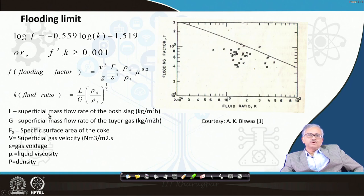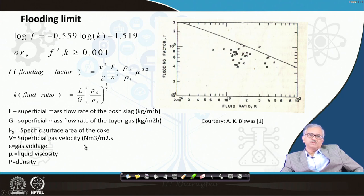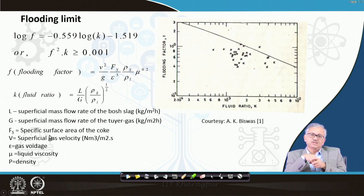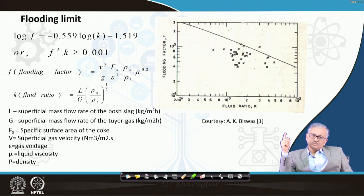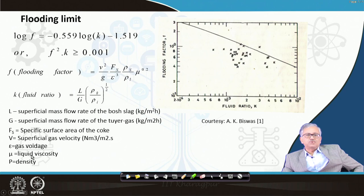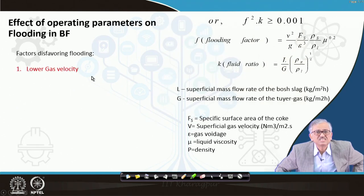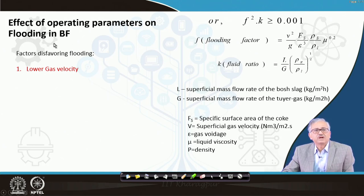L and G are the superficial mass flow rates of liquid and gas, respectively, in kg/m²/hour. F_s is the specific surface area of coke — the surface area of coke per unit volume of the bed. B is the superficial gas velocity in normal m³/m²/second, where 'normal' refers to normal temperature and pressure, not blast furnace conditions. To convert to actual velocity inside the blast furnace, blast volume must be recalculated under blast furnace conditions. Epsilon is the gas voidage and mu is the liquid viscosity.